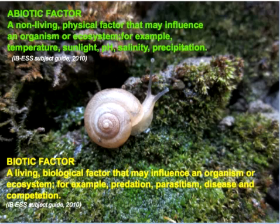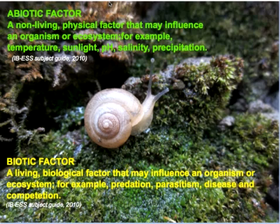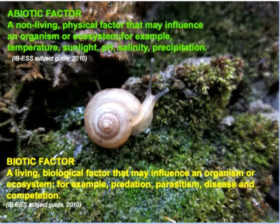Members of the same species are expected to be able to produce offspring with other members of that species, and in turn those offspring must be able to reproduce themselves — which is what we call viable offspring. Of course, members of the species also have to be living in similar kinds of habitats.